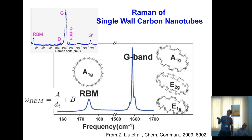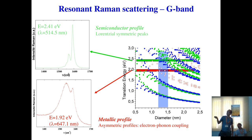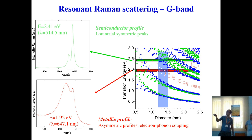In a Kataura plot showing transition energies versus diameter, a sample containing tubes of a specific diameter range will have resonant Raman response only for those tubes whose transition energy matches the excitation laser. Using red light excites only certain tubes; using a different wavelength selects others. This is resonant Raman: by choosing the excitation wavelength, you selectively probe specific chiralities in the sample.